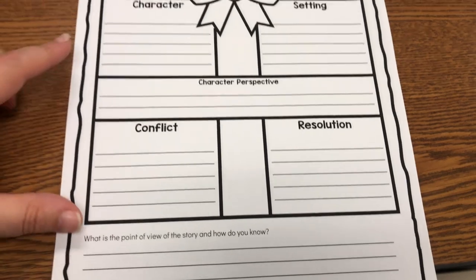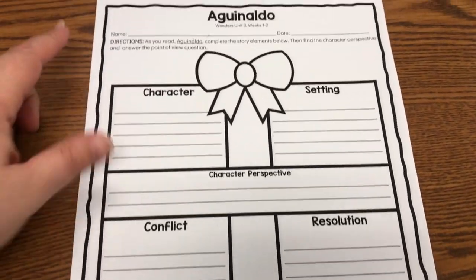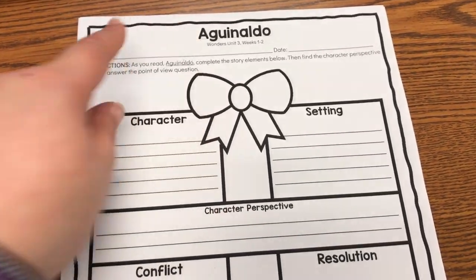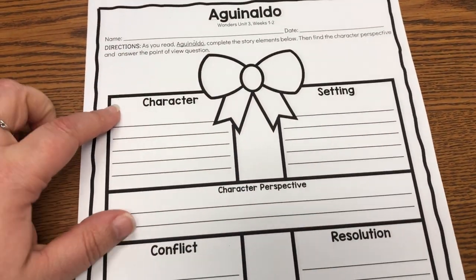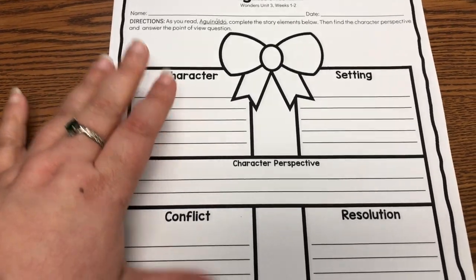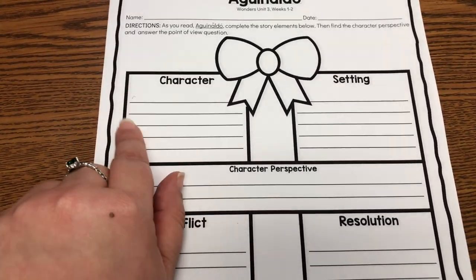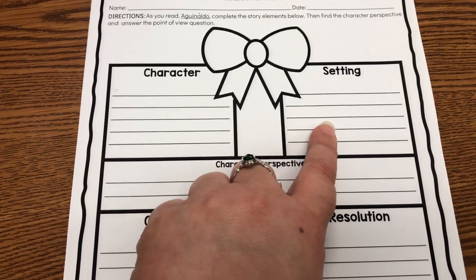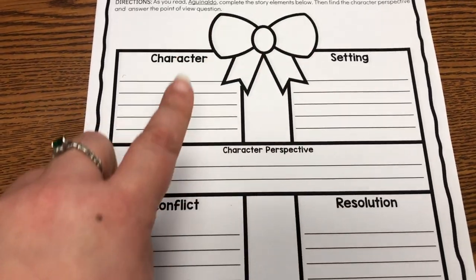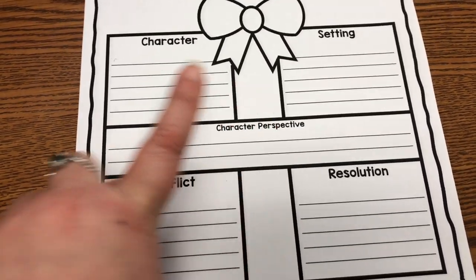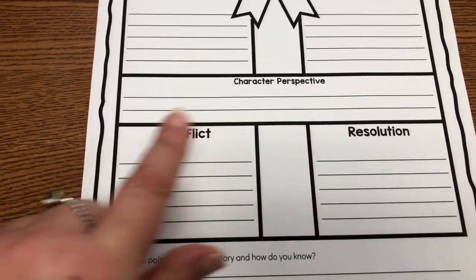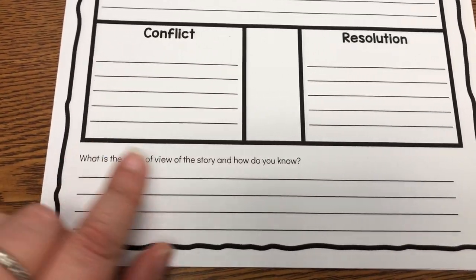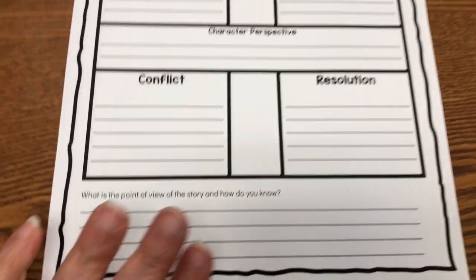I designed the handout as a present because an Aguinaldo is a surprise Christmas gift. The students had this to fill out information about the main character, the setting — the where and the when — the character perspective of the main character, the conflict, the resolution, and what is the point of view and how they know.